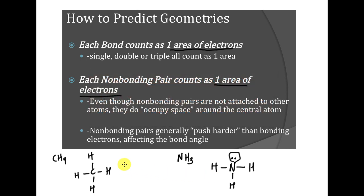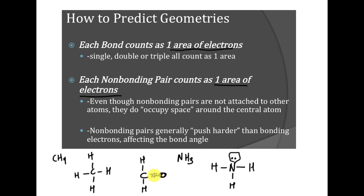One other thing: if I have something with a double bond — say carbon double-bonded with oxygen, and a hydrogen here — when counting areas, I count double, single, and triple bonds all as the same. So it would be: one, two, three areas. Even though there are two bonds in the double bond, it's still counted the same as a single bond. So on this structure I have three areas of electrons.